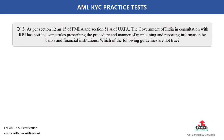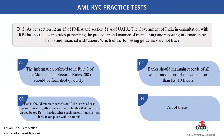Question number 15. As per section 12 and 15 of PMLA and section 51A of UAPA, the Government of India in consultation with RBI has notified some rules prescribing the procedure and manner of maintaining and reporting information by banks and financial institutions. Which of the following guidelines are not true? The options are: A. The information referred to in Rule 3 of the Maintenance Records Rules 2005 should be furnished quarterly; B. Banks should maintain records of all cash transactions of the value more than 10 rupees lakhs; C. Banks should maintain records of all the series of cash transactions integrally connected to each other that have been valued below 10 rupees lakhs, where such series of transactions have taken place within a month; D. All of these. The correct answer is option A.